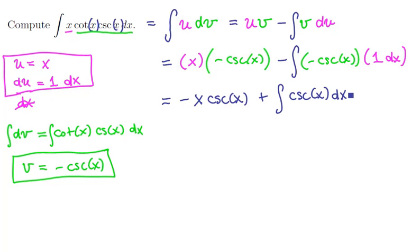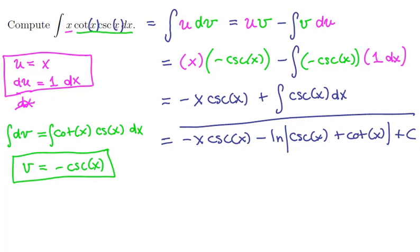Now this last guy is on our list of 20. So we're going to have minus x times the cosecant of x. And this integrates to negative the natural logarithm of the absolute value of the cosecant of x plus the cotangent of x. There's one antiderivative, add a c, and we have all our antiderivatives.